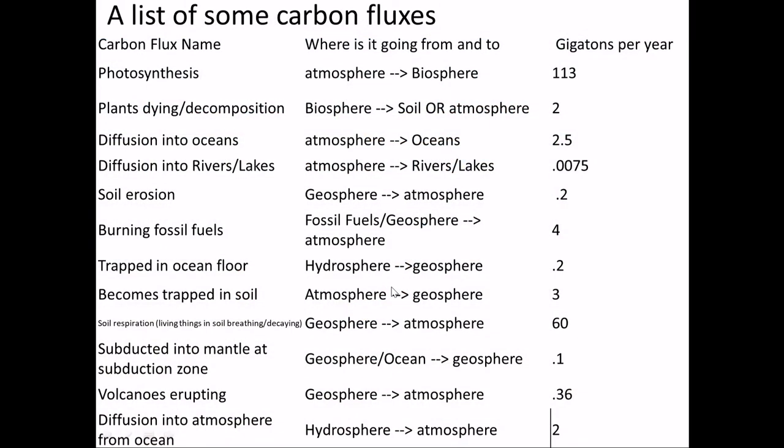Here's a list of carbon fluxes on Earth, showing where carbon goes from, where it goes to, and how many gigatons per year. The biggest one is photosynthesis — that's number one. Photosynthesis and respiration are basically the reverse of each other. Decomposition would be pretty high up there as well.